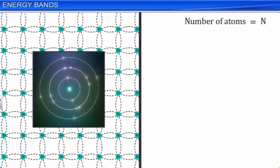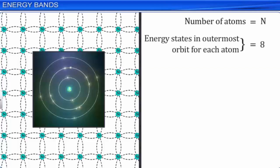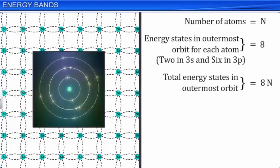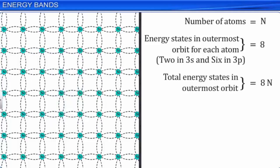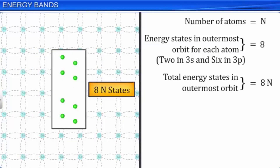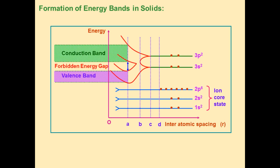Consider the number of atoms in a crystal to be n. The number of energy states in the outermost orbit for each silicon atom is 8: 2 in 3s and 6 in 3p. So for a total of n atoms, the available energy states is 8n.